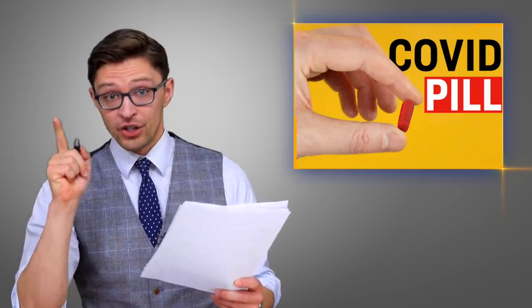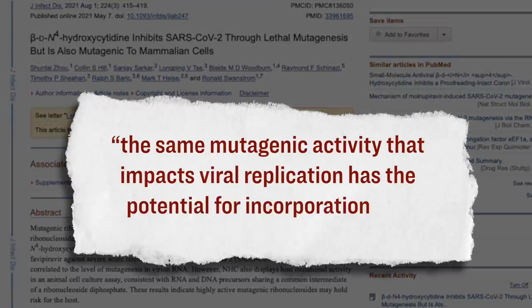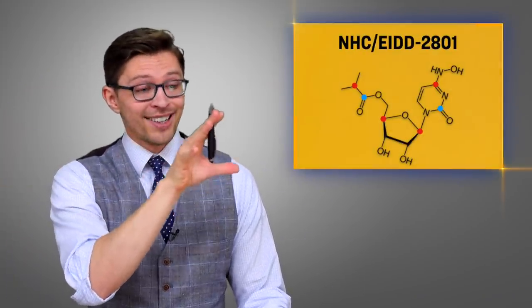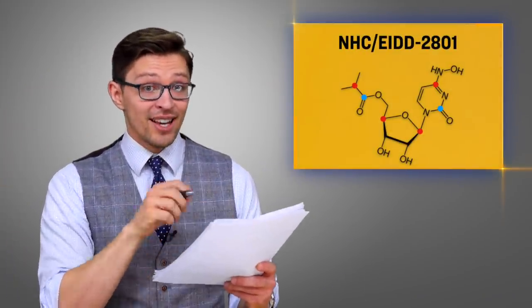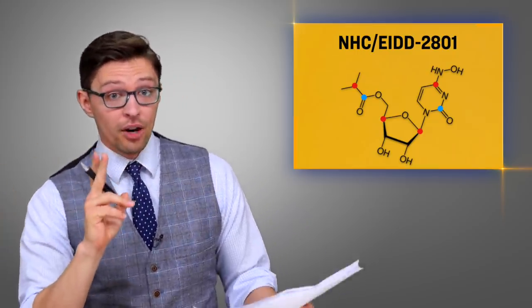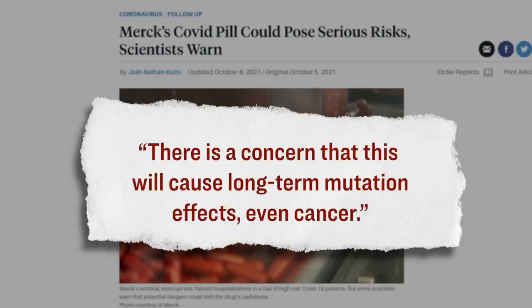However, according to researchers who published this study that you can find on the Journal of Infectious Diseases website, this method carries the potential for substantial risk because, quote, the same mutagenic activity that impacts viral replication has the potential for incorporation and mutagenesis of host DNA, which they further said could contribute to either the development of cancer or cause birth defects in an unborn baby. In fact, the researchers said that that's exactly what happened during their testing of NHC, which is the compound that's created by this pill. Here's how one of these researchers summed up his findings in an interview with Barron's Magazine. Quote: There is a concern that this will cause long-term mutation effects, even cancer. We here at the Epoch Times did reach out to Merck for comment, but we have yet to hear back.